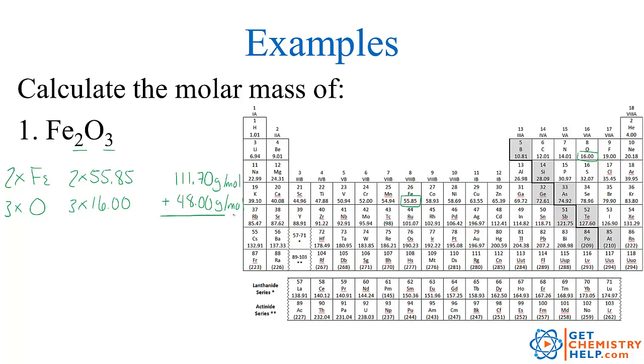So then we just add these together and that'll give me the mass of the entire compound iron three oxide so I get 159.70 grams per mole. So that tells me that if I have one mole of iron three oxide or 6.022 times 10 to 23rd iron three oxides it would have a mass of 159.70 grams.